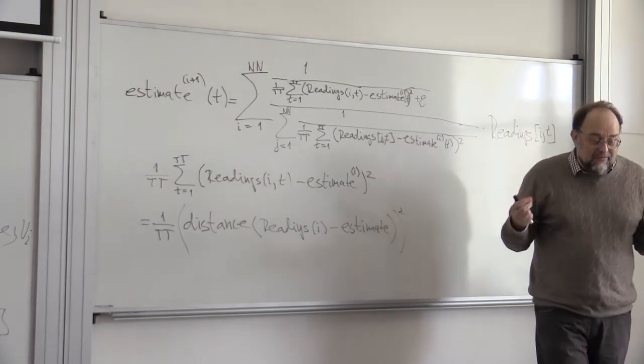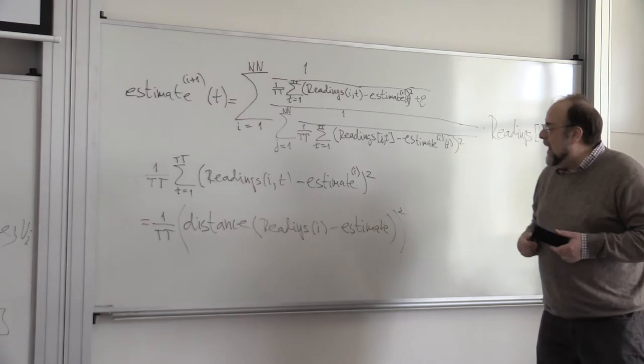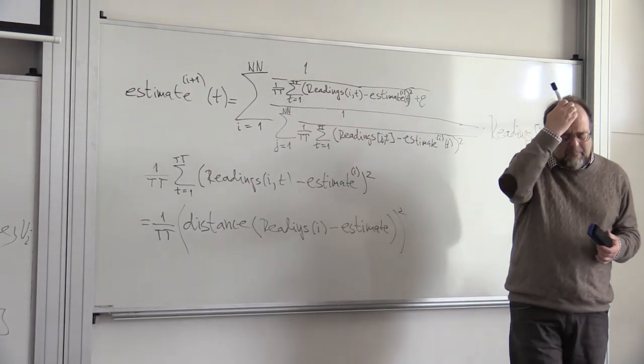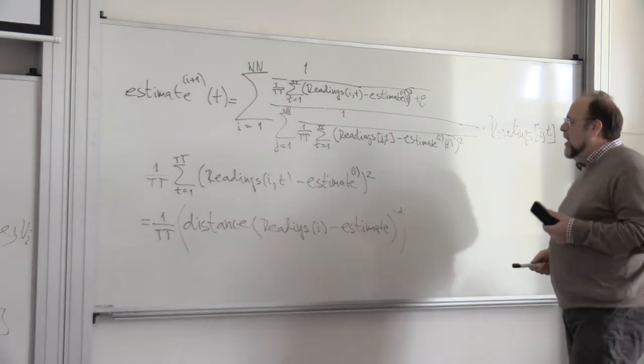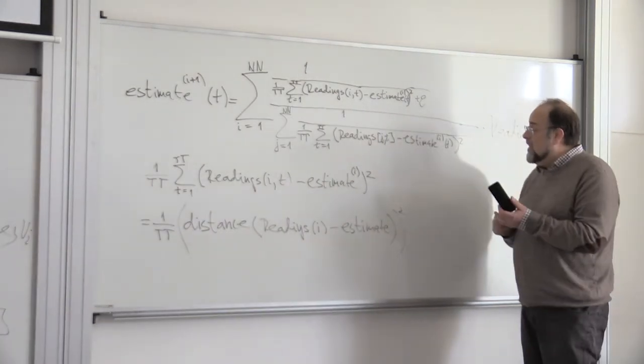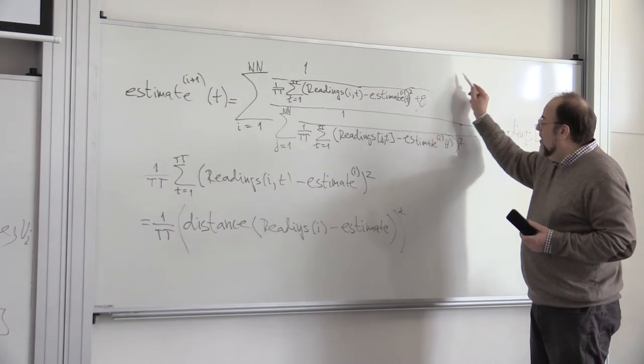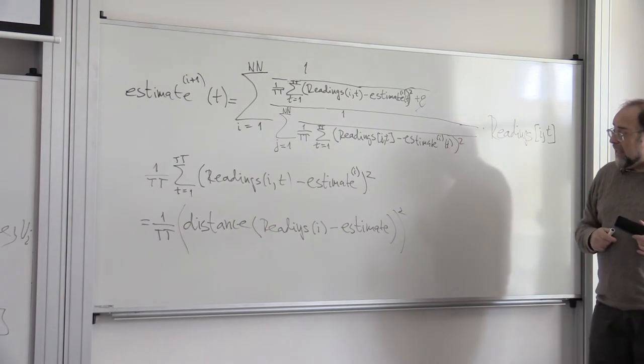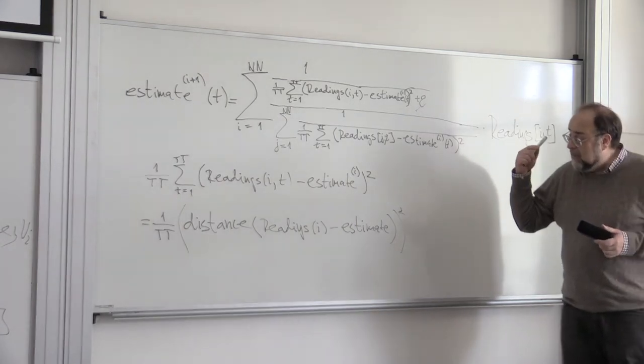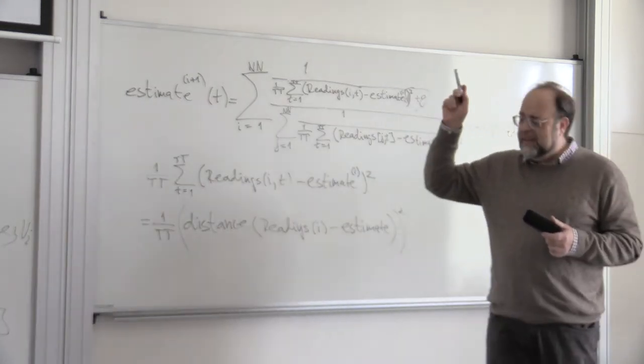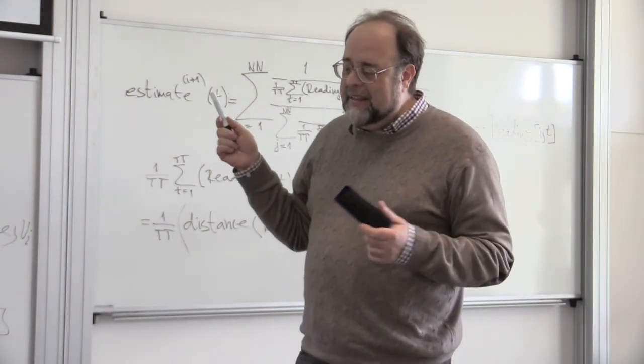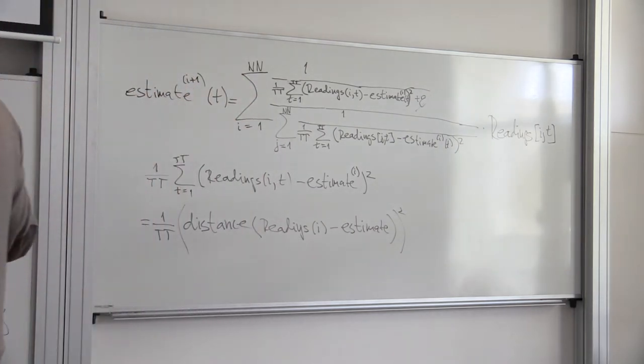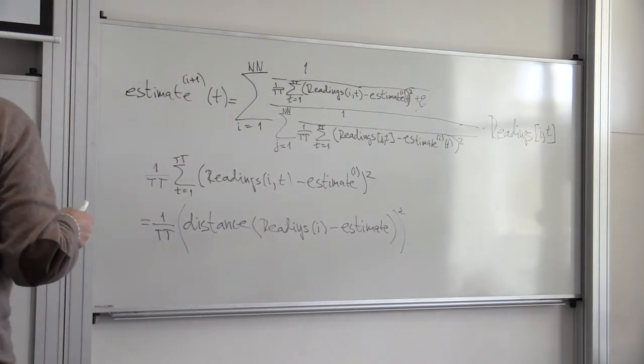So people try to remedy by adding a small epsilon here, so that you avoid this explosion near the pole. Well, guess what? In order for this to be robust, epsilon cannot be very small. And once epsilon is not very small, this starts looking more and more like a simple mean. So you have this conflict between accuracy and robustness.